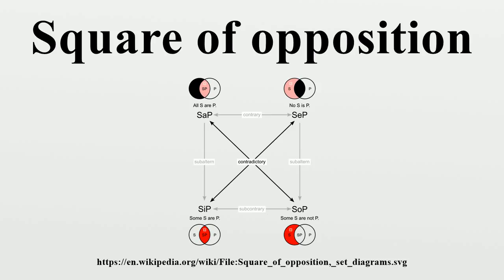In summary, universal statements are contraries: 'every man is just' and 'no man is just' cannot be true together, although one may be true and the other false, and also both may be false. Particular statements are subcontraries: 'some man is just' and 'some man is not just' cannot be false together. The particular statement of one quality is the subaltern of the universal statement of that same quality, which is the superaltern of the particular statement. In Aristotelian semantics, 'every a is b' implies 'some a is b', and 'no a is b' implies 'some a is not b'.